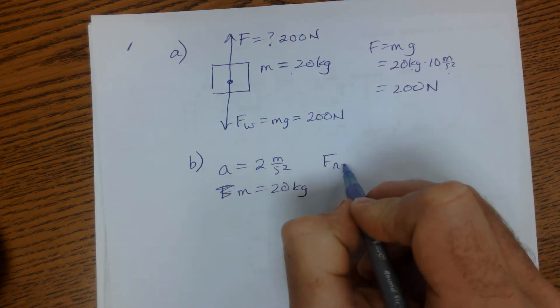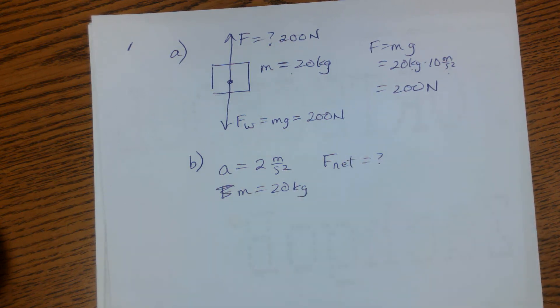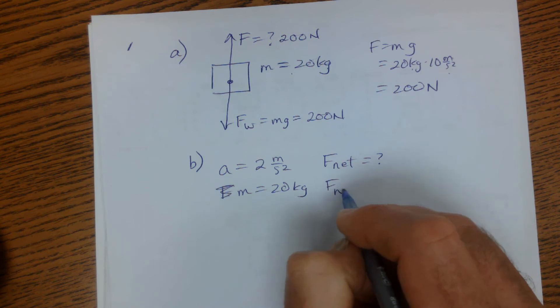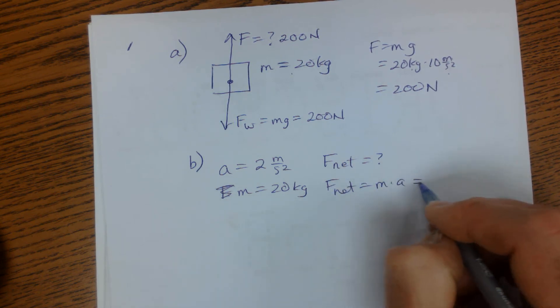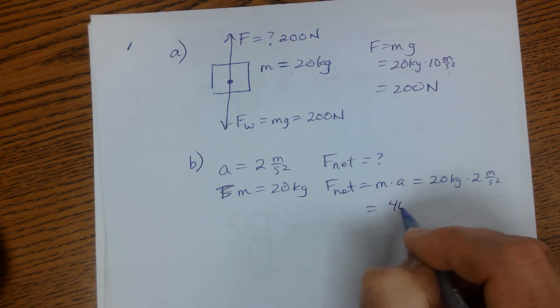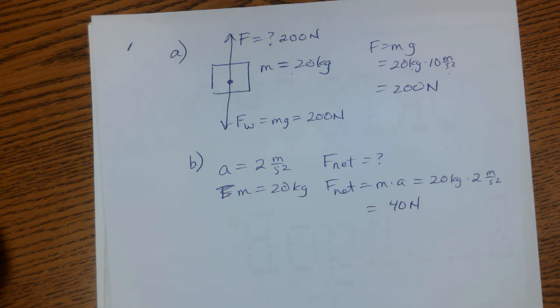So what's the net force need to be to do that? Well, net force is equal to mass times acceleration. 20 kilograms times 2 meters per second squared is 40 newtons.